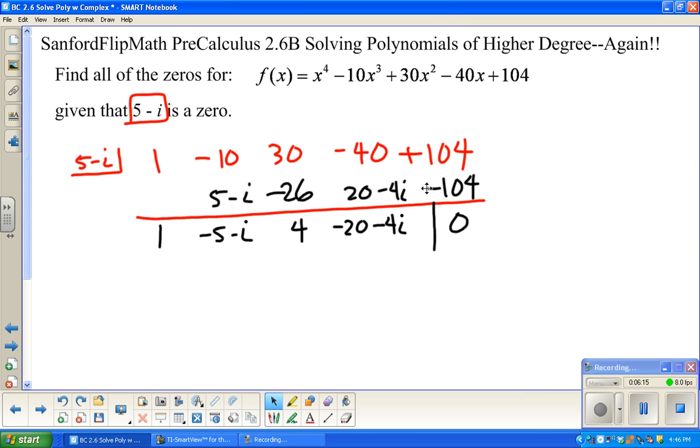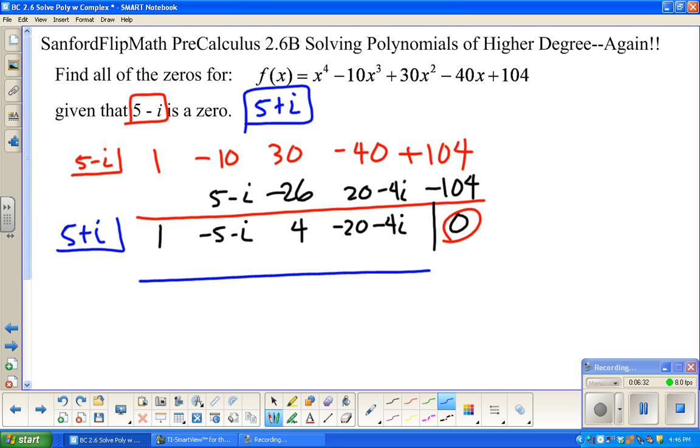So negative 104. Now, remember, by work, what I mean is this remainder needs to be zero. If it's not, something went wrong. Just a quick reminder. If 5 minus i is a zero, automatically, so is its conjugate. So here we go. Same song, second verse. 5 plus i. Oh, that's nice. Look at negative 5 plus 5. That's just zero. Zero. Add. Multiply. So 4 times i is 4i. And everything worked there. This represents x squared plus 0x plus 4, and we need that to also equal 0.